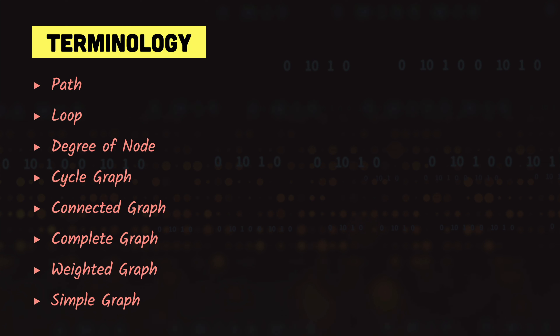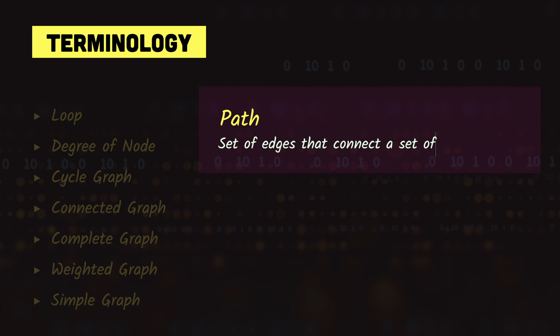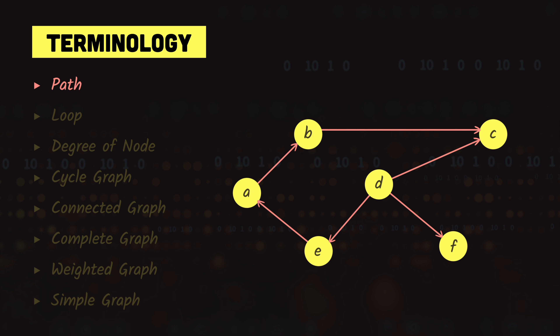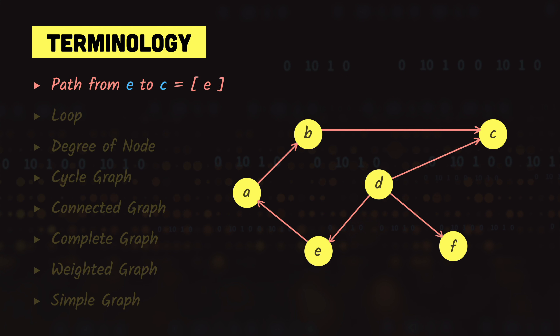Now let's look at some graph terminology. First we have path. A path to a node or vertex is a set of edges from the starting vertex to the ending vertex. For example, if we need a path from vertex E to vertex C, we travel E to A, then B, then C. So the path would be E, A, B, C.